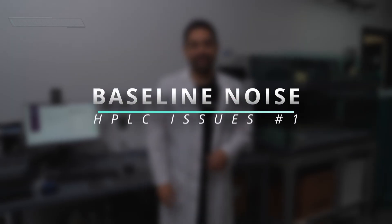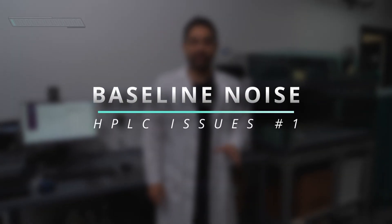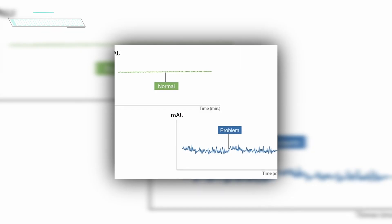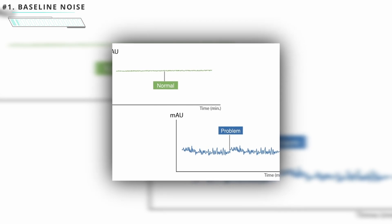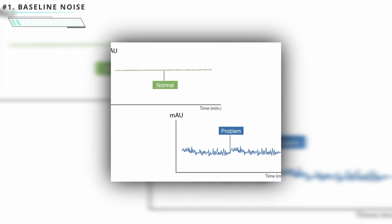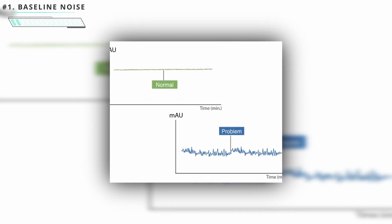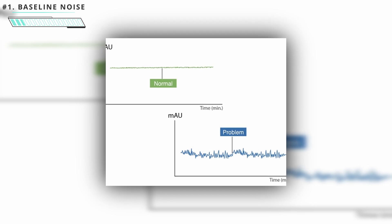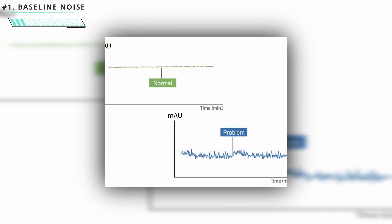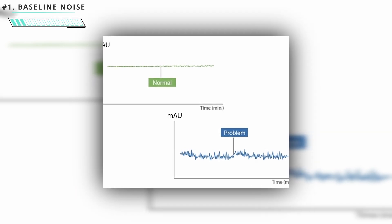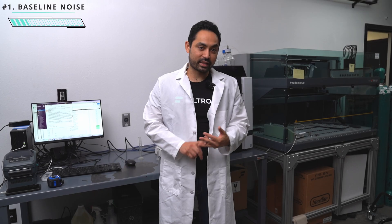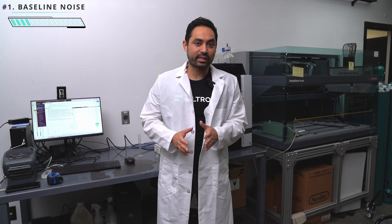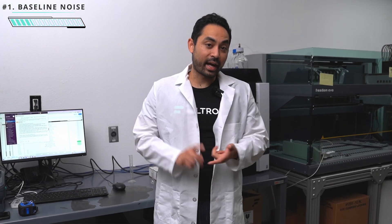The first most common problem is baseline noise. Baseline noise is when you look at the baseline of an HPLC chromatogram and it's extremely wavy, or there are a lot of bumps going up and down. The cause could be the column, the pump, or the detector, so you have to isolate each one by one.